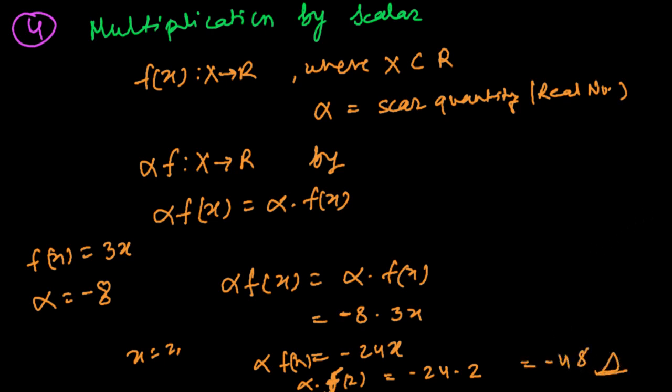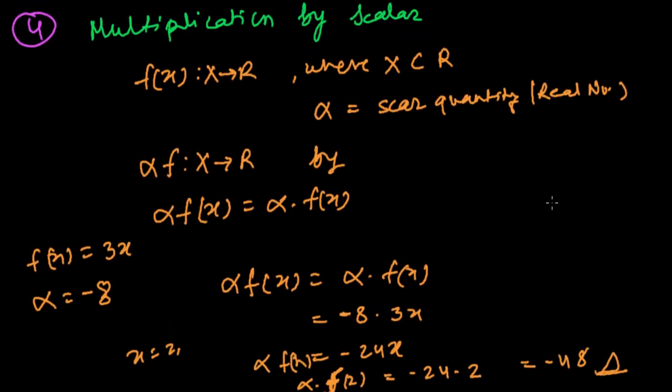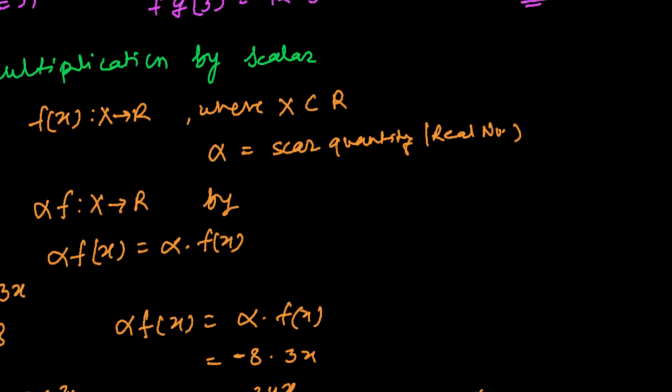And this is how when a real-valued function is multiplied by a scalar quantity, we process it. In the next presentation, we'll be talking about the quotient of two real functions.